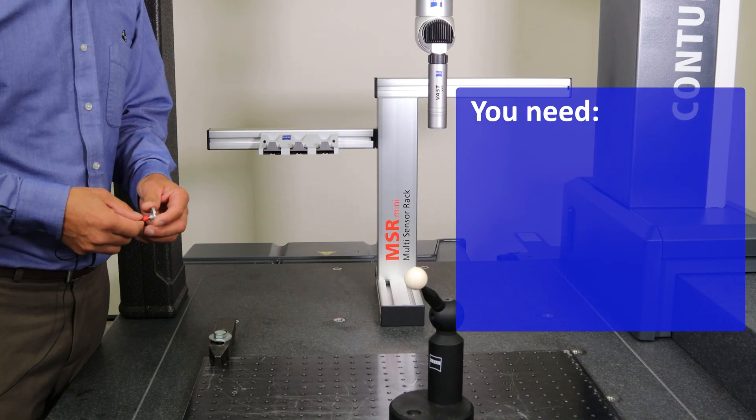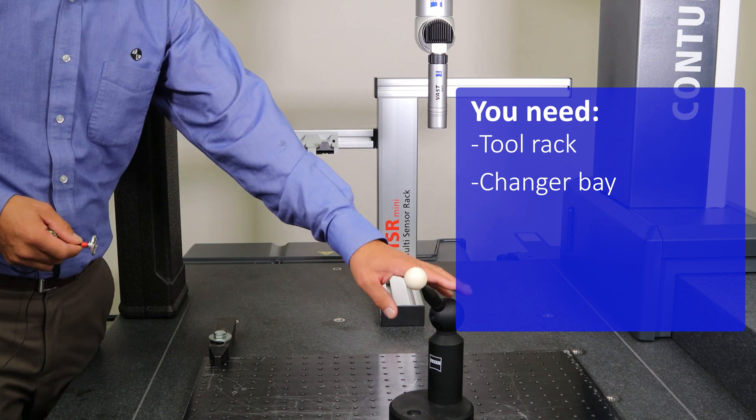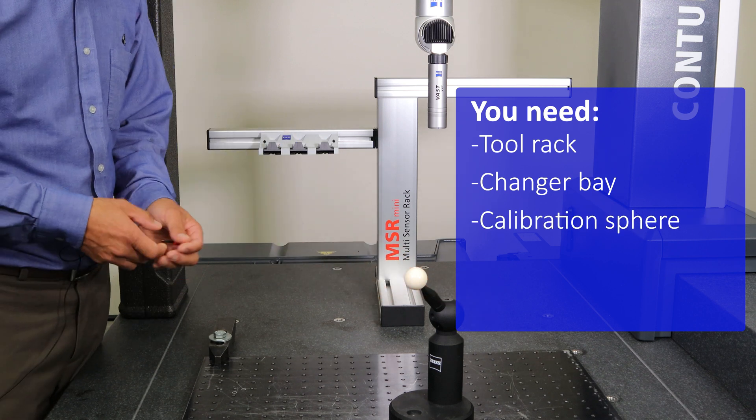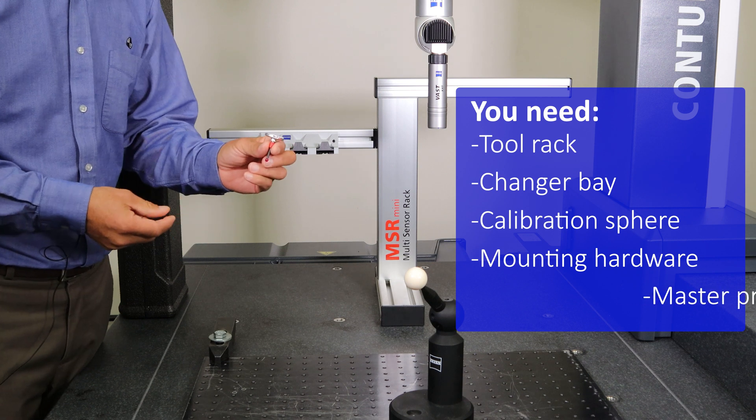You're going to need a few things. First, you'll need a tool rack, the changer bay, a calibration sphere, the hardware for mounting the rack to the table, and a master probe.